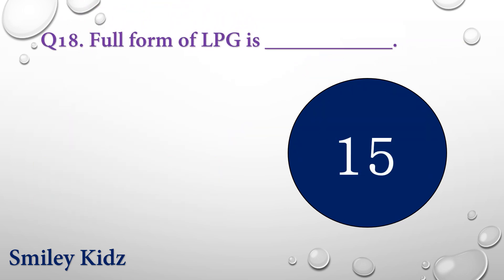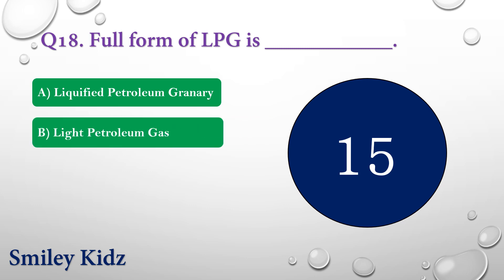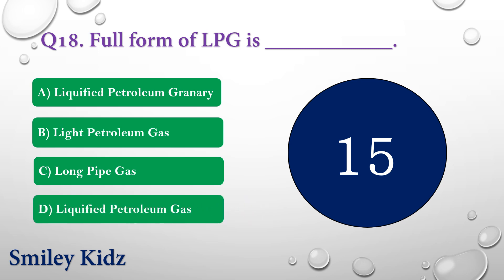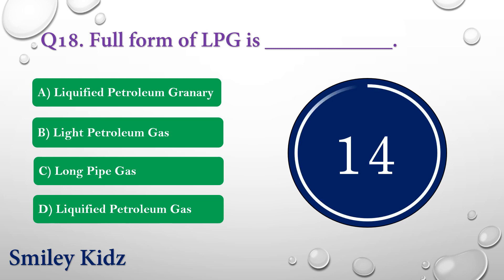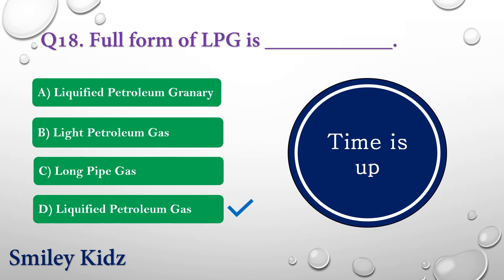Question number eighteen: Full form of LPG is dash. The options are: A) Liquefied Petroleum Granary, B) Light Petroleum Gas, C) Long Pipe Gas, or D) Liquefied Petroleum Gas. Your time is up and the right answer is option D — Liquefied Petroleum Gas. Full form of LPG is Liquefied Petroleum Gas.